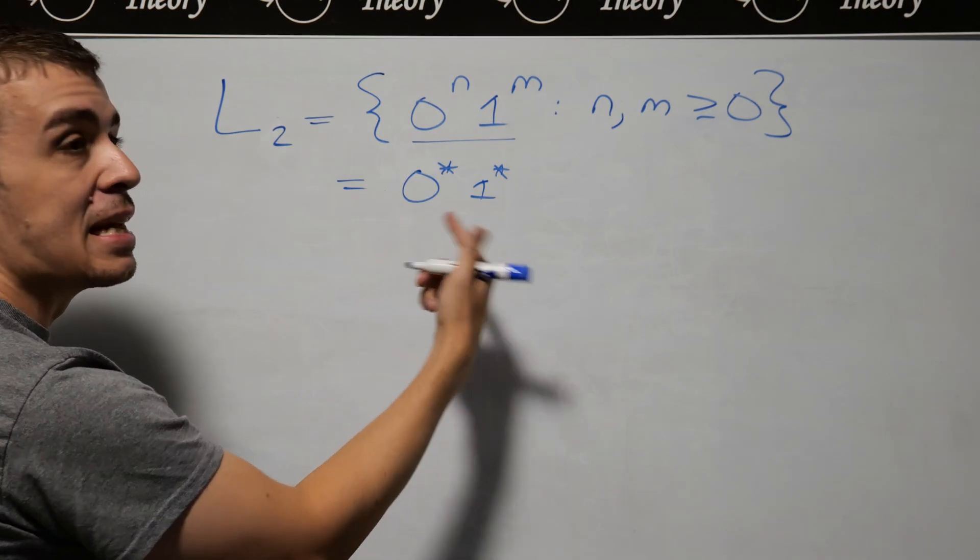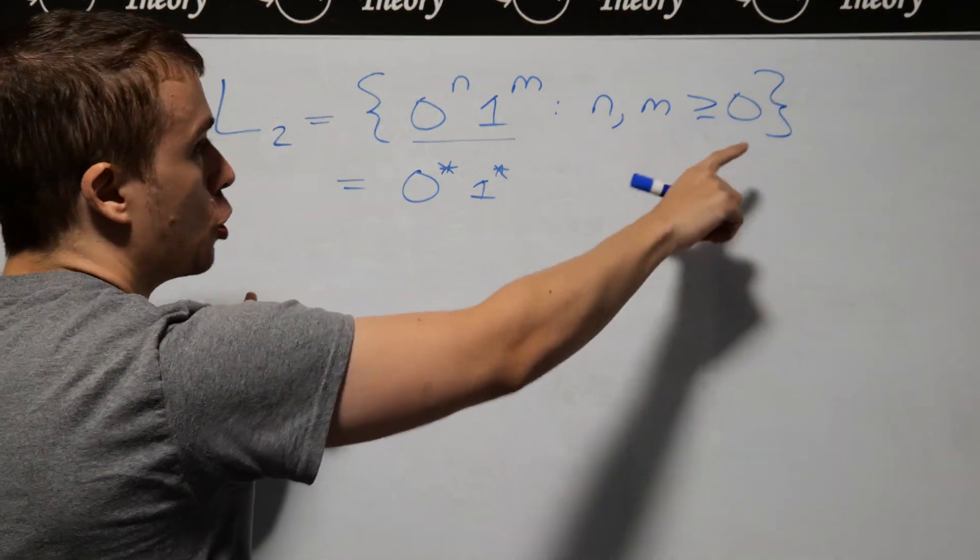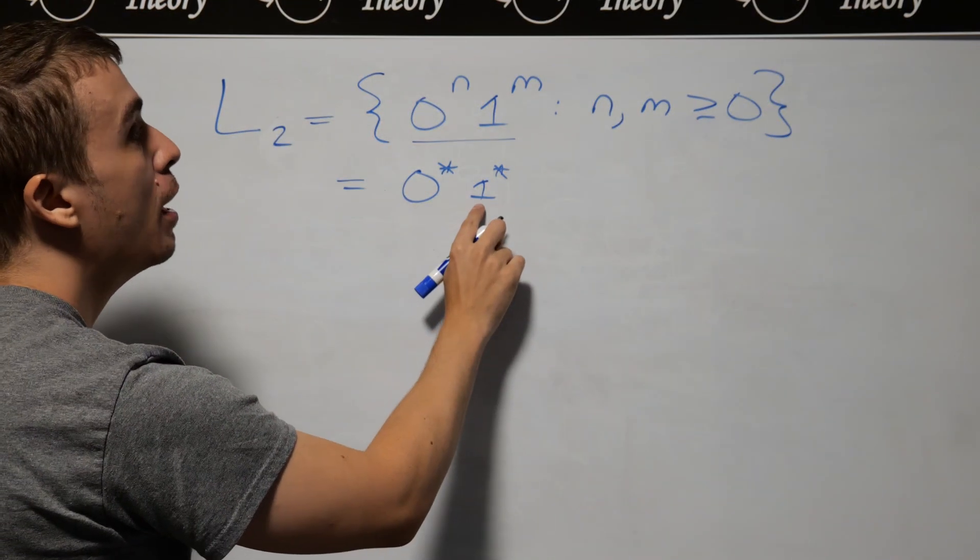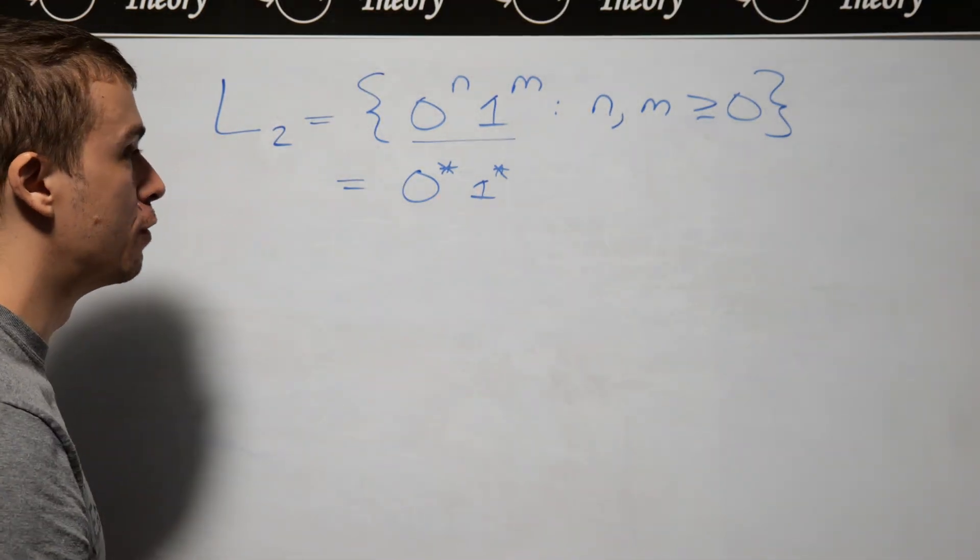because it's just some number of zeros, any number that we want, because there's no restriction other than being at least 0, and then followed by some number of ones. So we can make a regex for this, but what we're after is a context-free grammar.